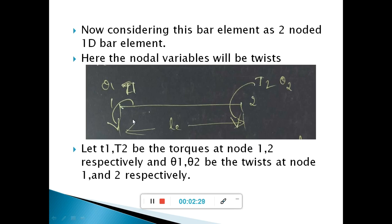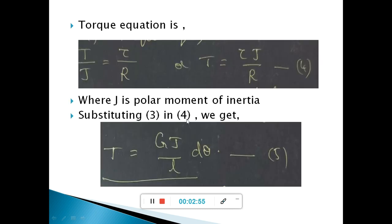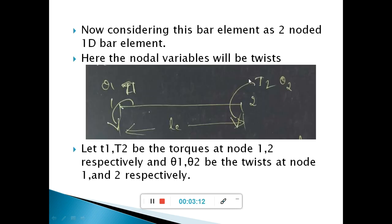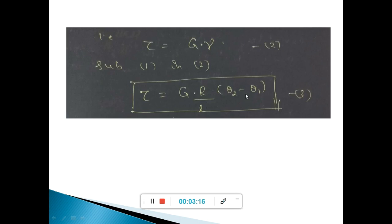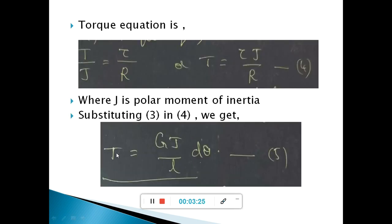Now let us consider this rod as a 1D bar element with two nodes. The nodal variables are the angular twists. At the two nodes, let us consider d1 and d2 with torques T1 and T2 respectively. Theta-1 and theta-2 are the twists at nodes 1 and 2 respectively. Using the torque equation T over J equals tau over r, we can write T equals tau times J over r, where J is the polar moment of inertia. Substituting the expression for tau, we get the torque equation T equals GJ over L times d-theta.